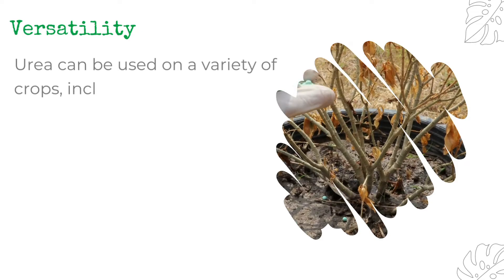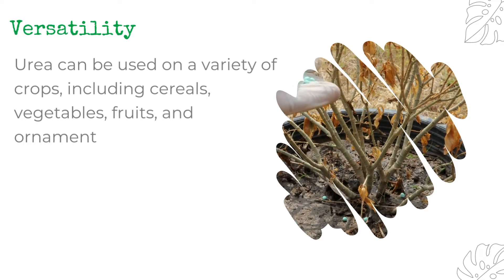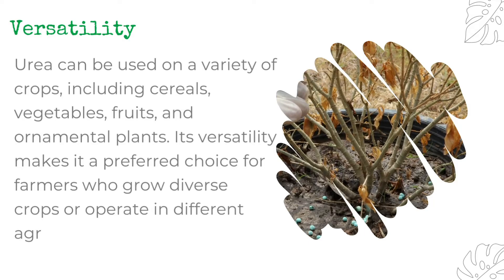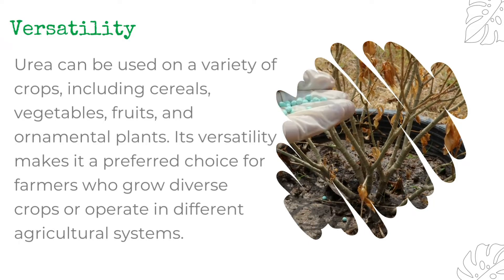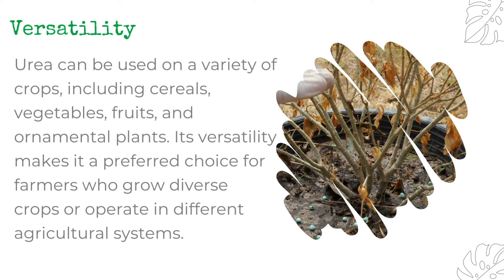Versatility: Urea can be used on a variety of crops, including cereals, vegetables, fruits, and ornamental plants. Its versatility makes it a preferred choice for farmers who grow diverse crops or operate in different agricultural systems.